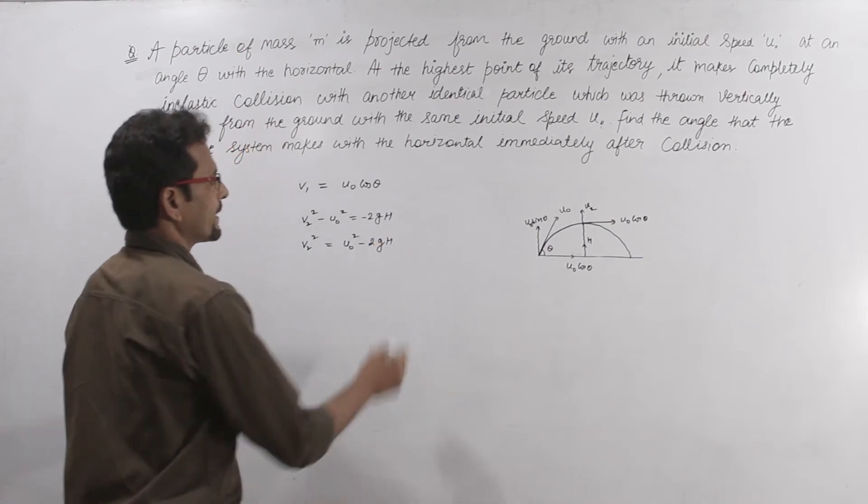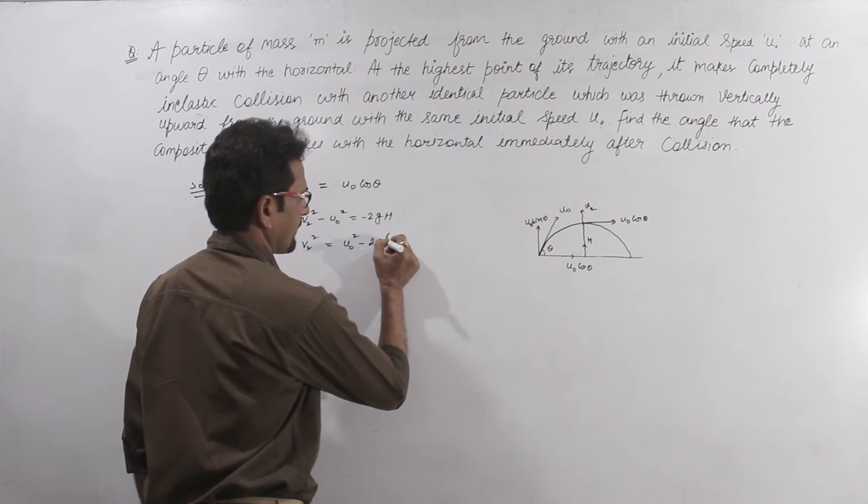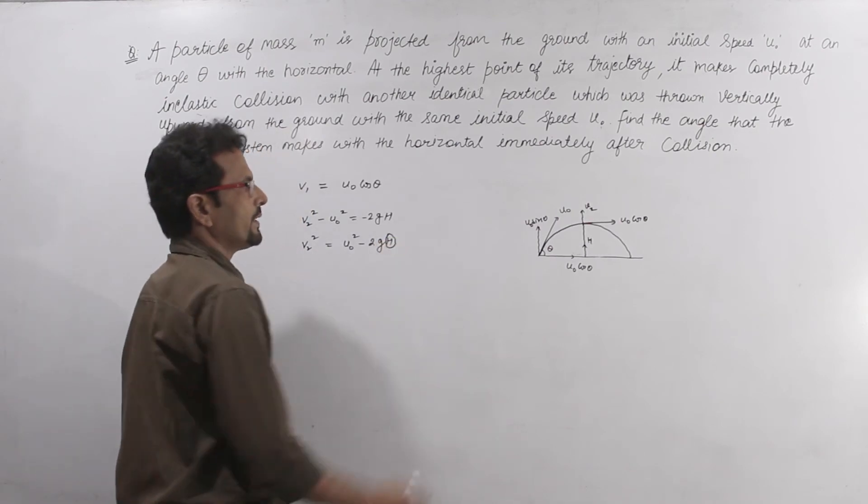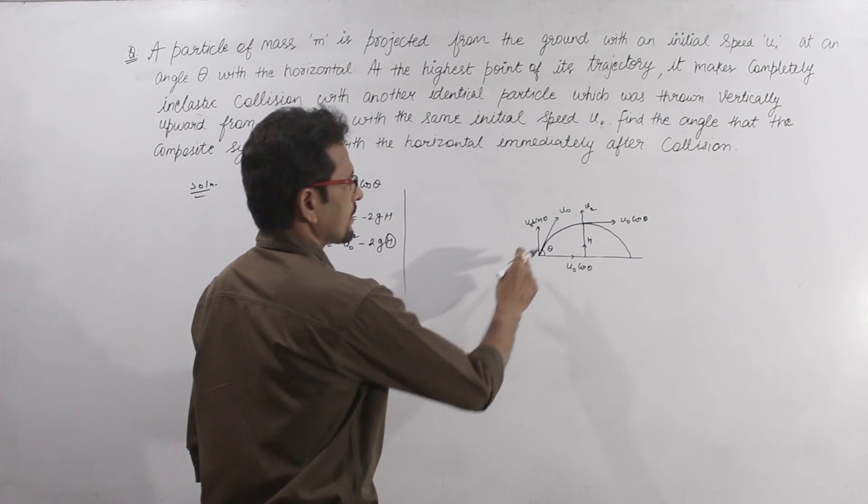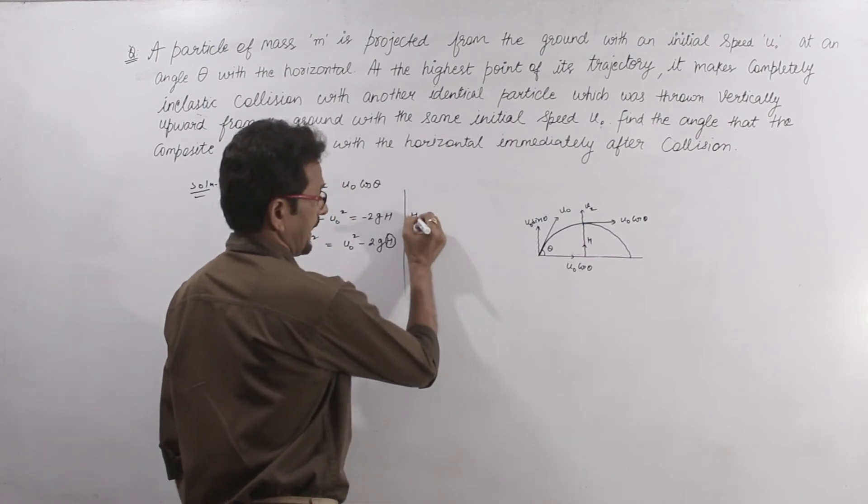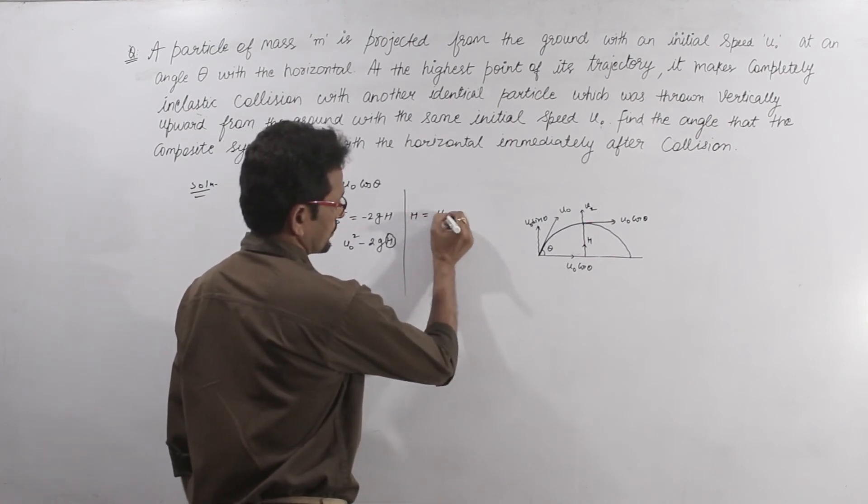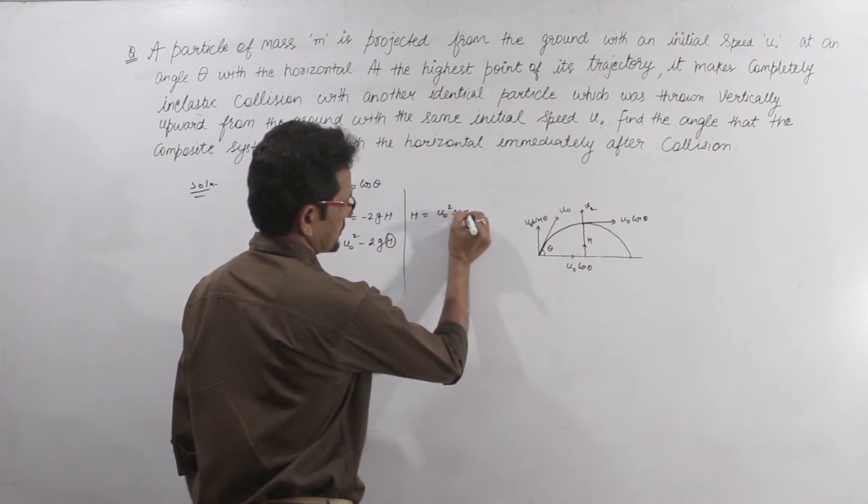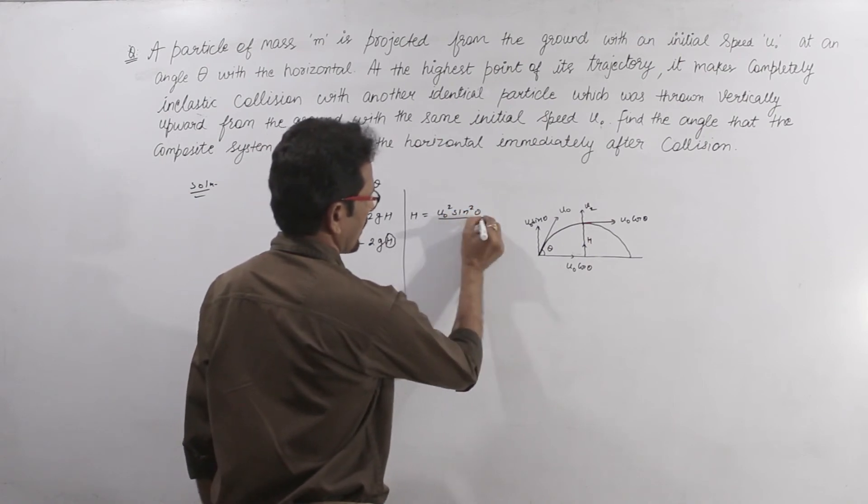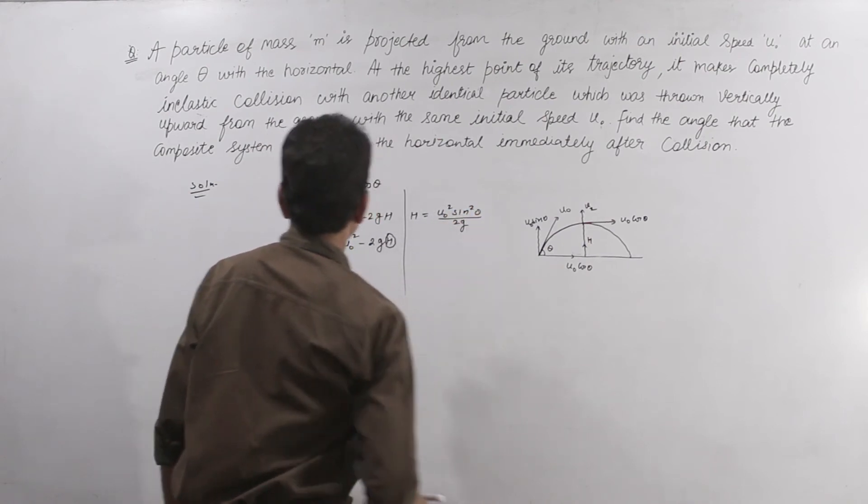Now we need to eliminate h. For h, we know the formula for projectile motion: h equals u0 squared sin squared theta upon 2g.